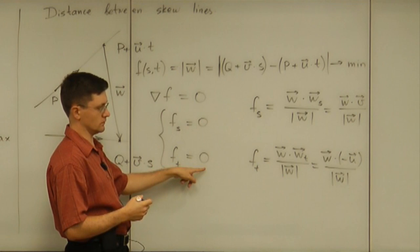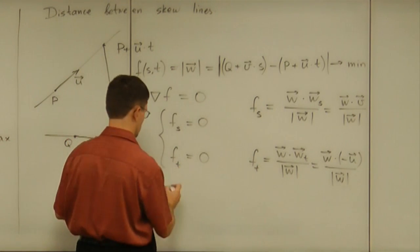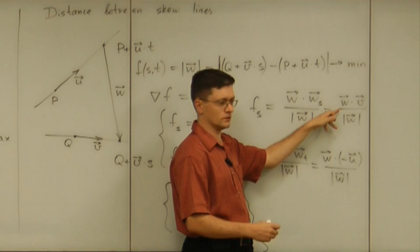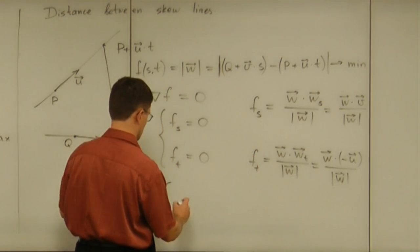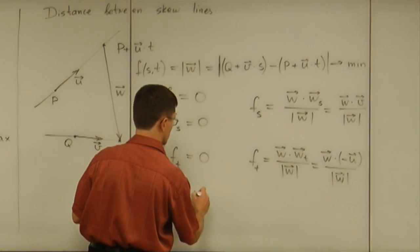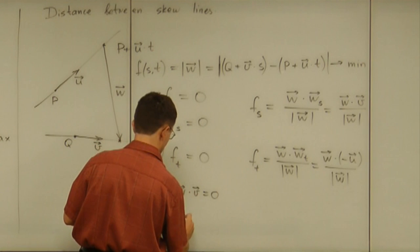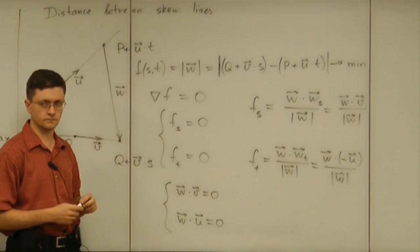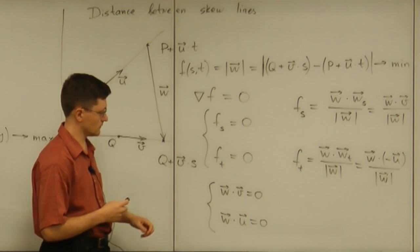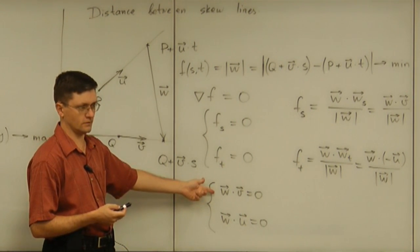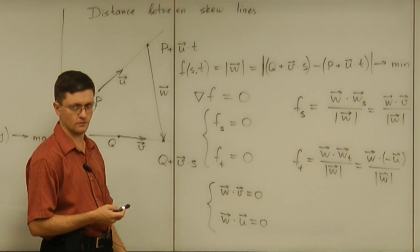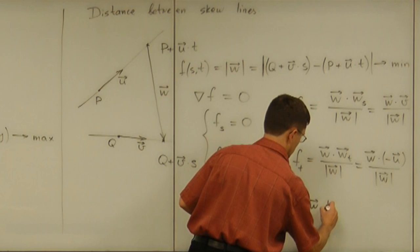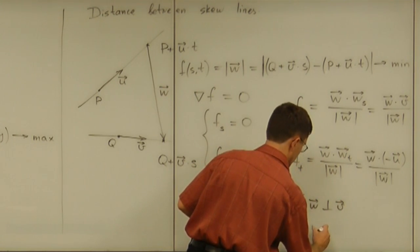Now, what does it mean that we equate those to zero? What's the meaning of the system now? What's the meaning of this equation? That equals zero means what? It means the dot product is zero. So, w dot v is zero. And the second equation says w dot u is zero. What does that mean? Well, the first equation says w is perpendicular to v. And the second says w is perpendicular to u.